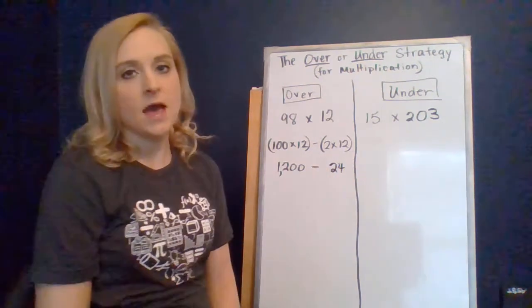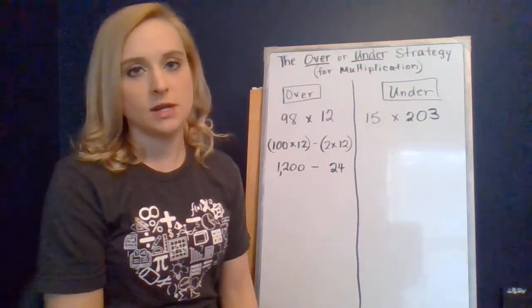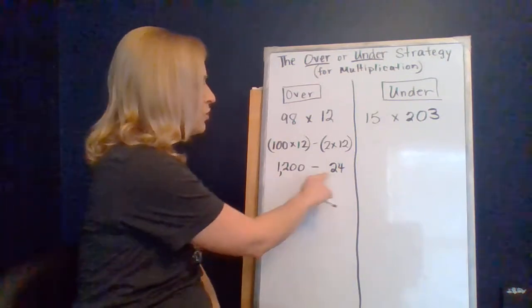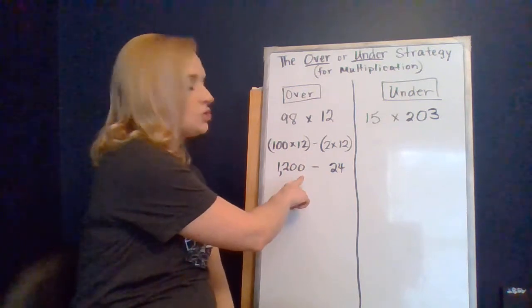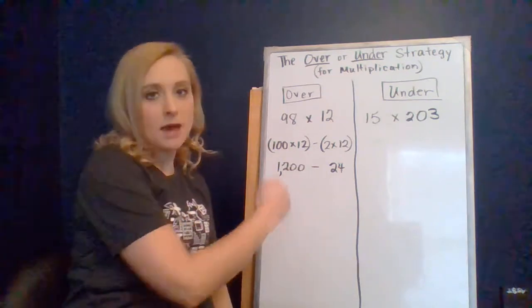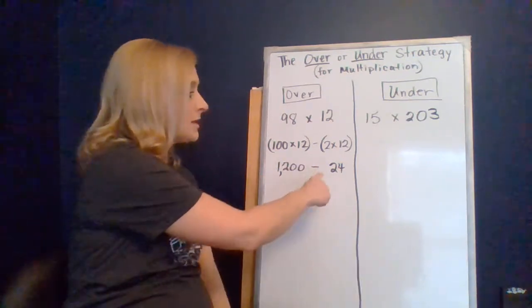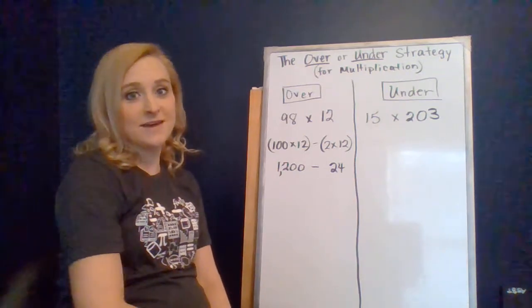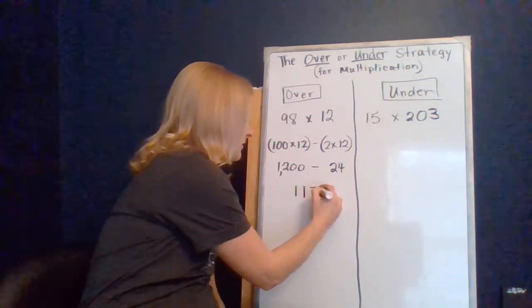So now we have this mental math problem that we could probably solve in our head of 1200 minus 24. And if we're thinking about a number line and skipping back, if I'm at 1200 and I skip back 10, that's 1190. Then skip back another 10, that's 1180. And then skip back four more, that's 1176. So my answer is 1176, and that's using the over strategy.